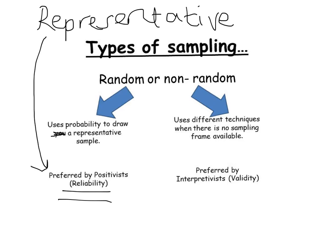Interpretivists are more concerned with validity, so they're not necessarily bothered about having a sample from which generalisations can be made to apply to everyone, because they're looking at small-scale interactions between different people. They'll use different techniques where there might not be a sampling frame available. So a positivist sociologist might use something like the telephone book to get a sample, but interpretivists, because they're researching small groups of people, there might not be a specific list of people for the research that they're doing.